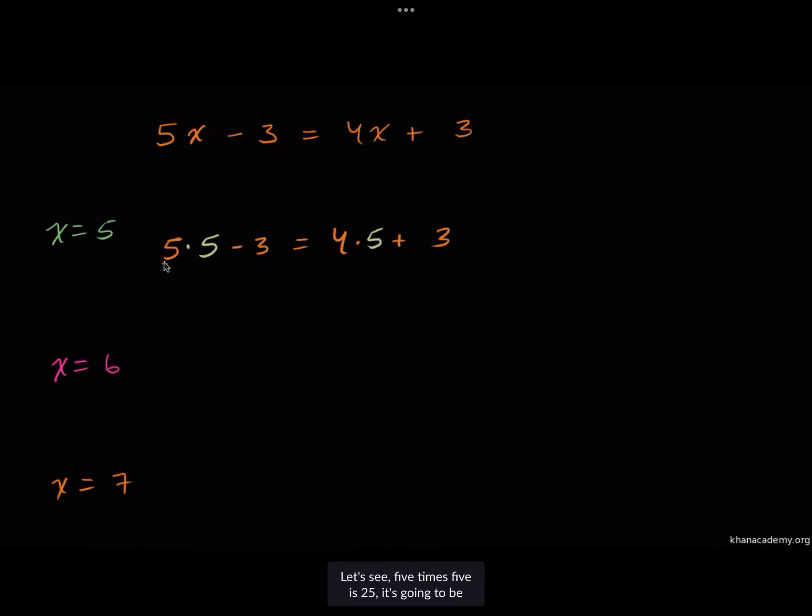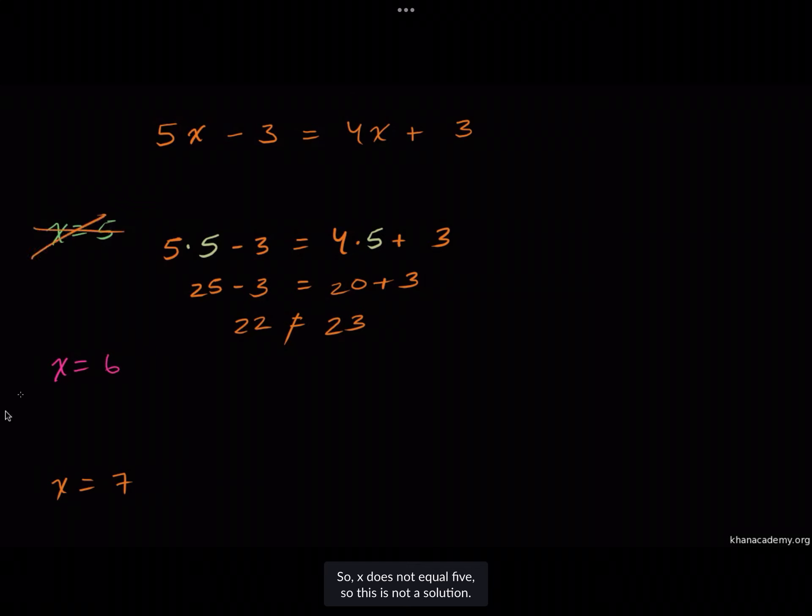Now is this true? Let's see. Five times five is 25, so 25 minus three needs to be equal to 20 plus three. 25 minus three is 22, which needs to equal 23. No, this is not true. So x does not equal five. This is not a solution.